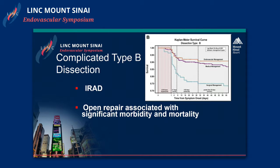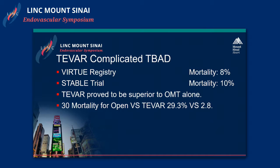The IRAD data was very clear — type B dissections, especially acute, are best treated with endovascular therapies. Open repair is associated with significant morbidity and mortality, as shown on the Kaplan-Meier curve. This was tested with the VIRTUE registry, where mortality was 8%, and the STABLE trial, where mortality was 10%, showing TEVAR was proven superior to optimal medical therapy for complicated acute dissections. 30-day mortality for open repair was 29% versus 2% for TEVAR.